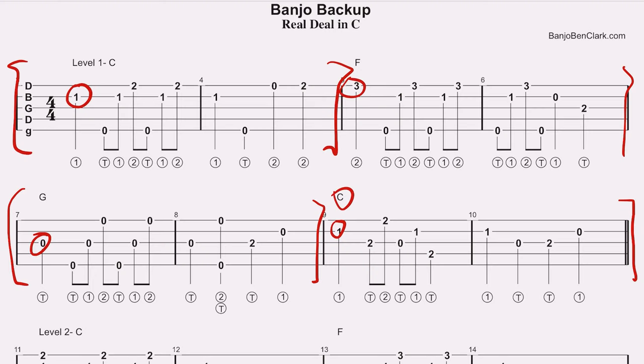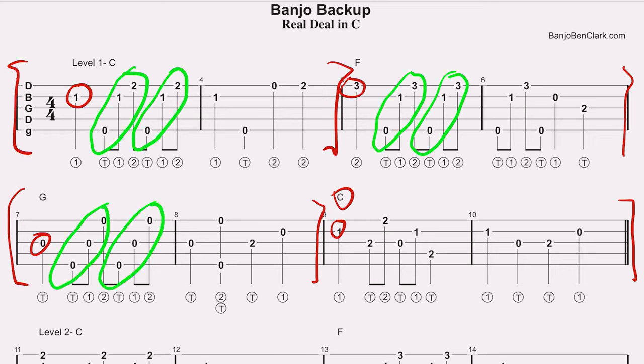To help fill out those measures and get us picking, we're going to throw in a couple of forward rolls. A forward roll has three notes in it, so whenever we do two of them it will fill out the rest of that four-beat measure. After we play that one quarter note on the root, we play a forward roll and another forward roll fills out the measure — for C, F, and G alike.